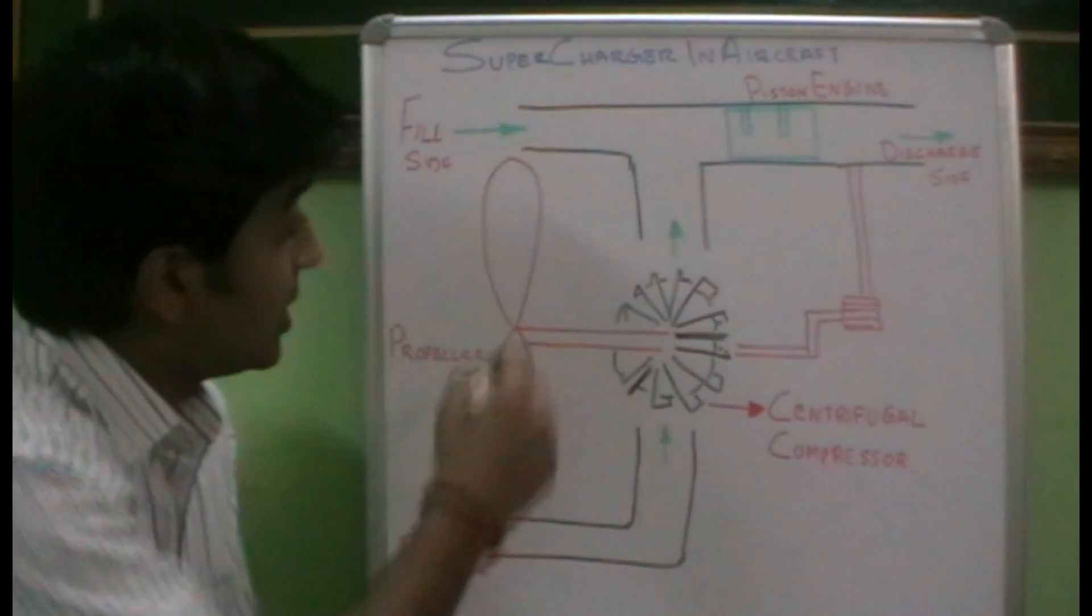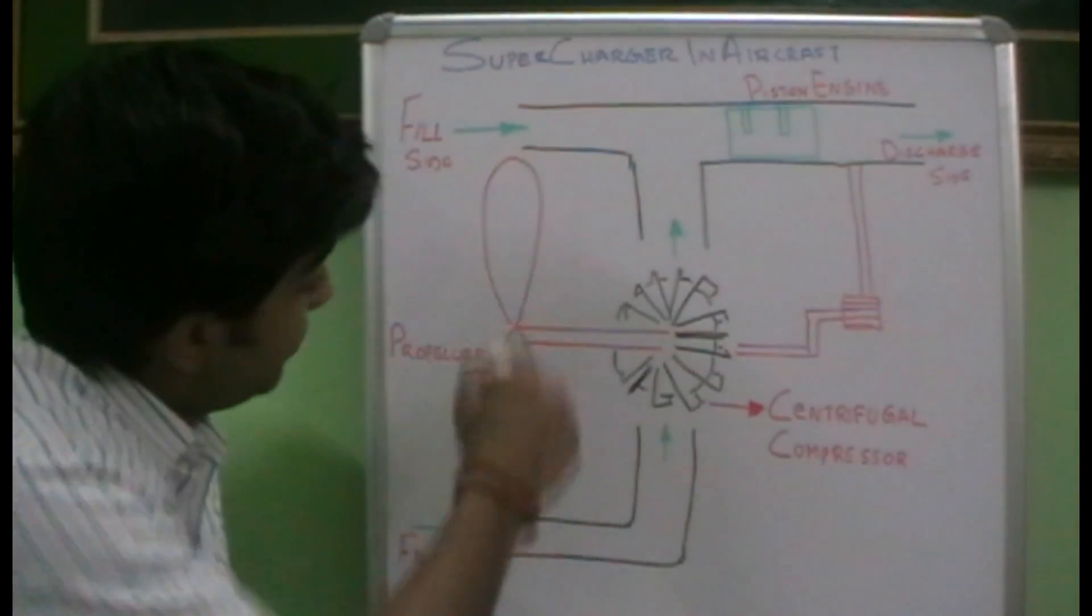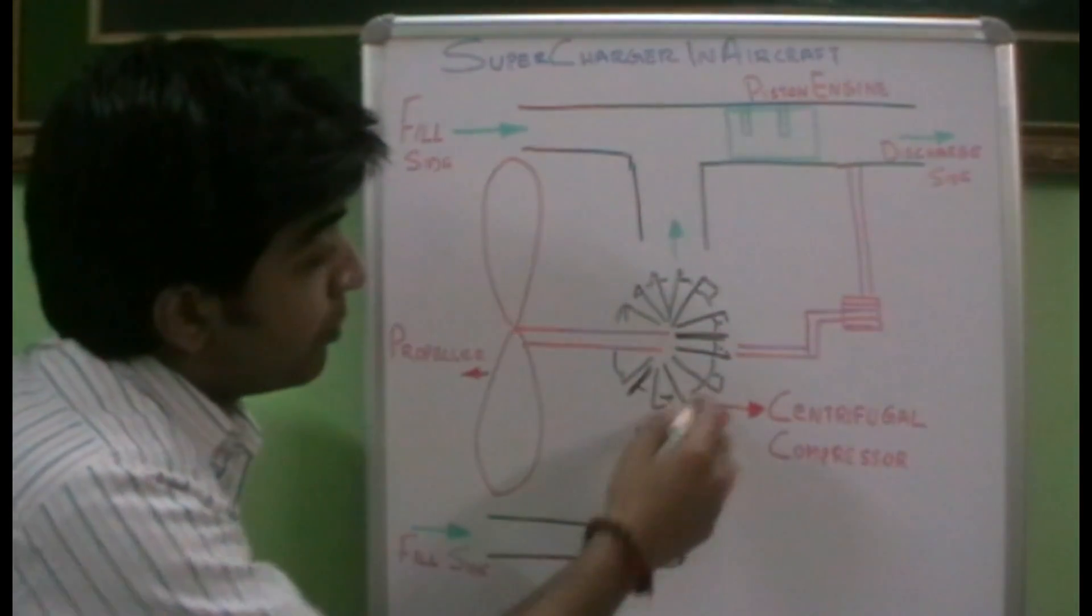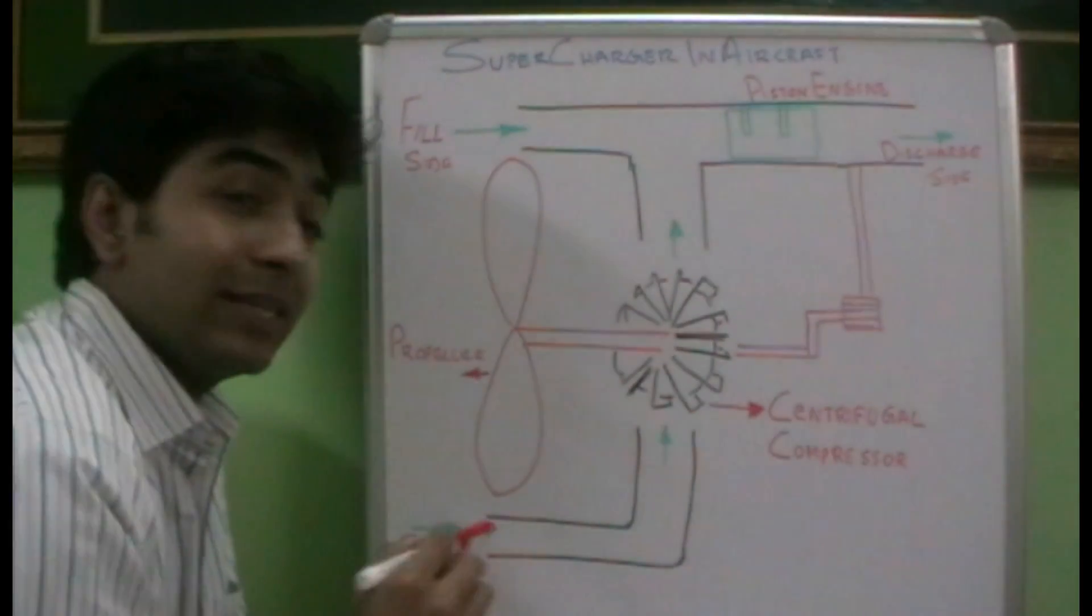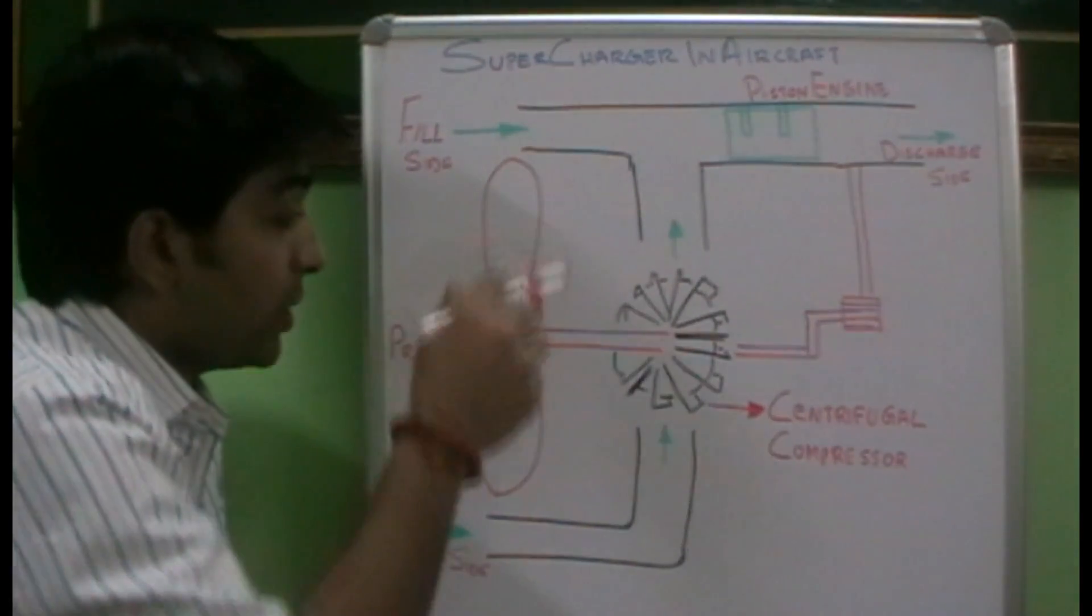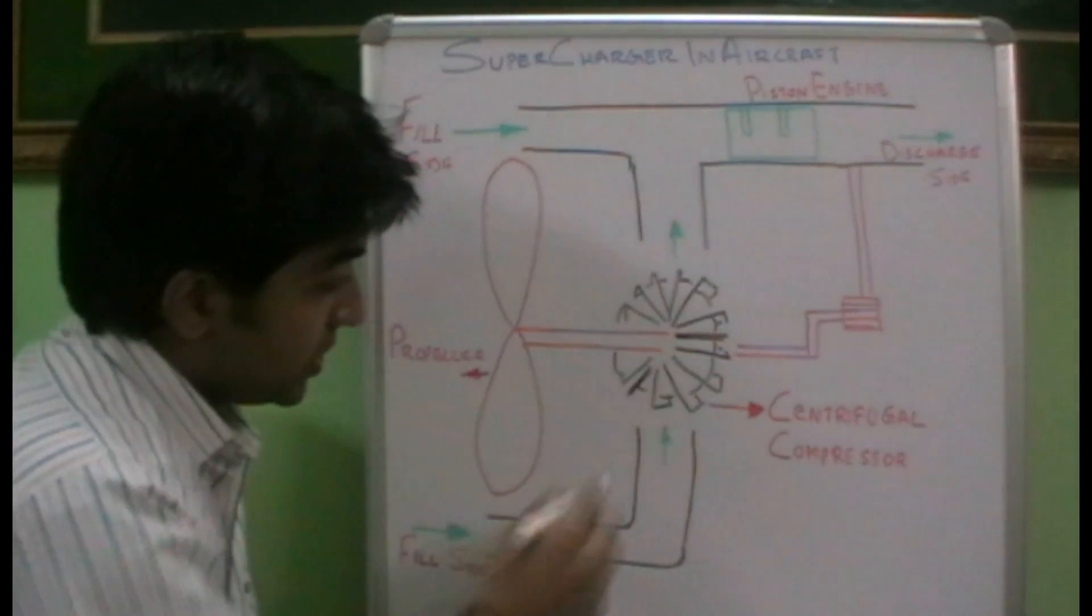Now, how it is done - you can see the components involved. We have the propeller over here connected to the centrifugal compressor. This is the piston engine. As the engine works and the propeller rotates, you can see the centrifugal compressor is over here.